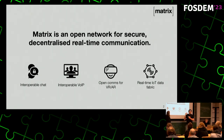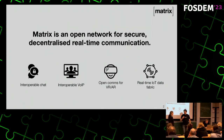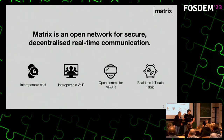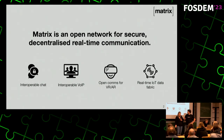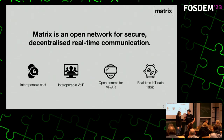People might be lost in the room right now or viewing this online with no idea what they're getting into. So, what is Matrix? It's an open network for secure and decentralized real-time communications. A lot of you probably know it for chat and VoIP, but we can do many things on Matrix — chat, voice over IP, IoT, VR, 3D worlds, and more.